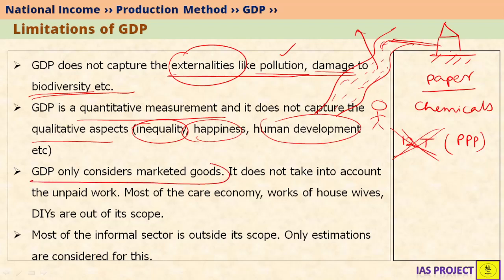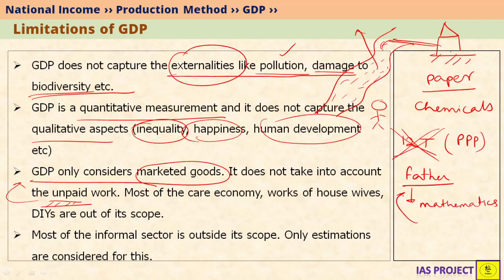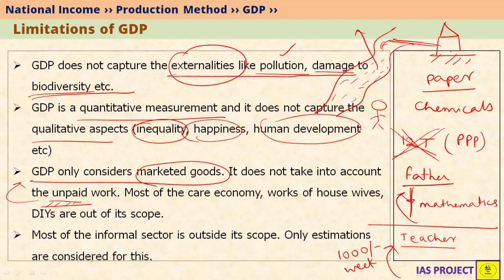GDP considers only marketed goods. Whatever work is done for free — generally called unpaid work — is not counted in GDP. For example, if a father is teaching his children mathematics and the children are not paying him, this activity is not considered an economic activity and therefore is not included in GDP measurement. However, if the same children go to a tuition teacher who charges 1,000 rupees per week, that is considered an economic activity and is added to GDP.